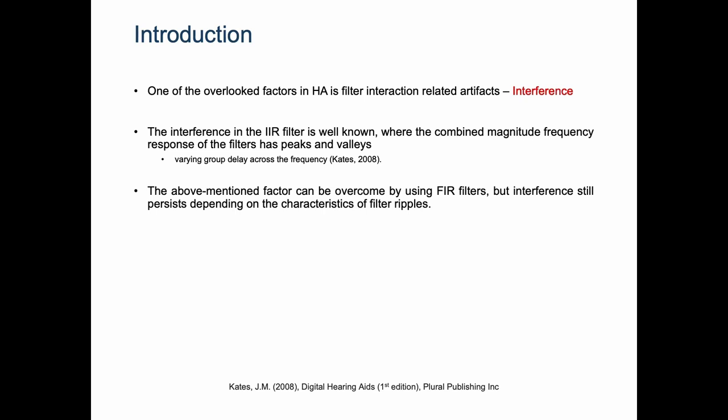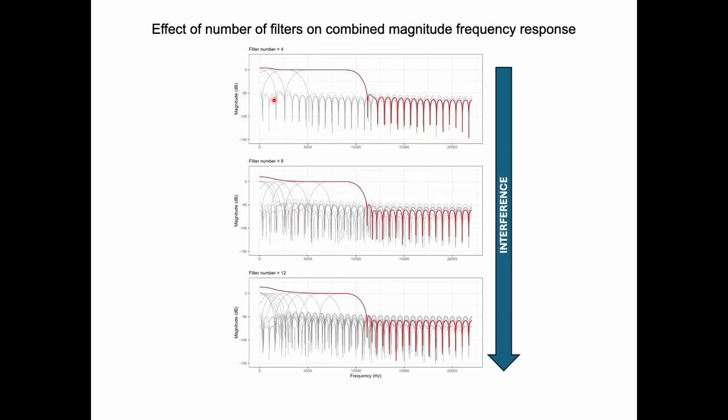The above mentioned factor can be overcome by using FIR filters, but the interference still persists depending on the characteristics of the filter ripples. This plot shows the grey line representing individual filter frequency response and the red one indicating the combined magnitude frequency response.